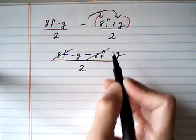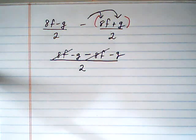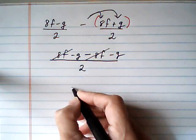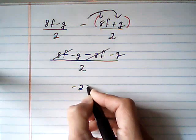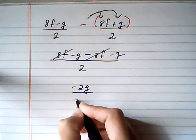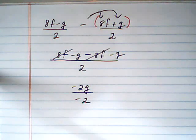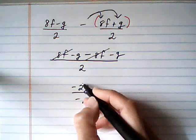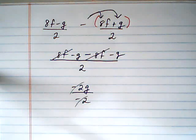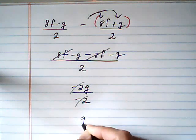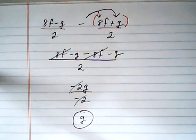Then we can simplify the numerator. 8f take away 8f is gone. We have minus 2g all over minus 2. The minus 2s cancel out, and we're left with a final answer of g.